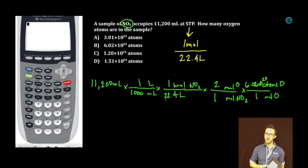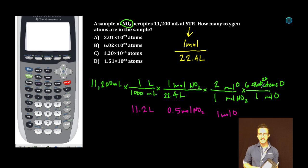Alright, let's do some mental math here. 11,200 times one divided by a thousand. 11.2 liters. Times one divided by 22.4. We've got 0.5 moles NO2. Times two divided by one. That's one mole of oxygen. Times Avogadro's number. 6.02 times 10 to the 23 atoms. Boom.